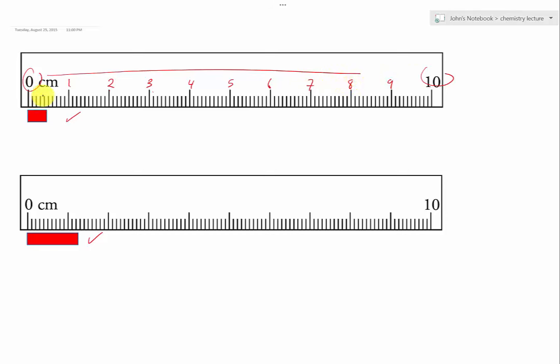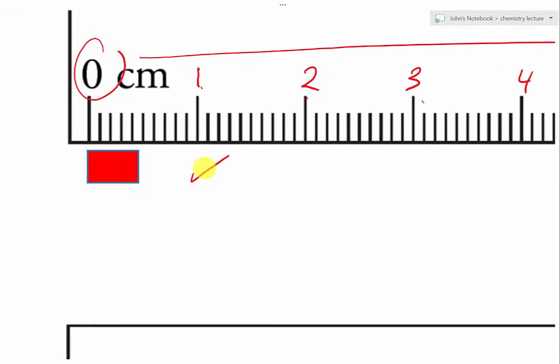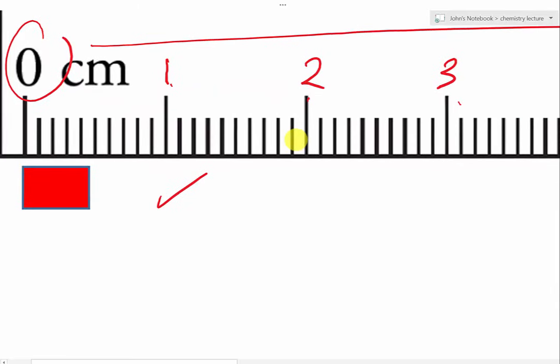But we also have smaller increments and there are ten of them. We can zoom this in. We realize that they are point one, point two, point three, and so on until we get to point nine and we get to one.